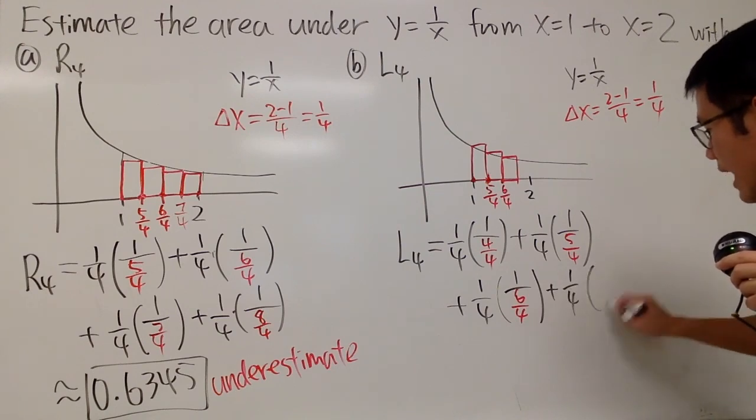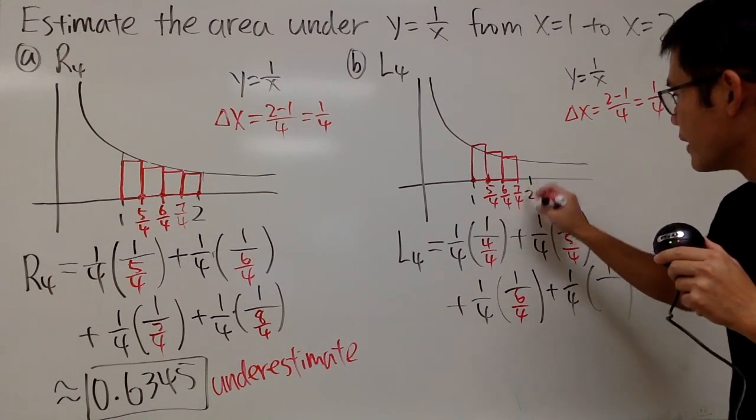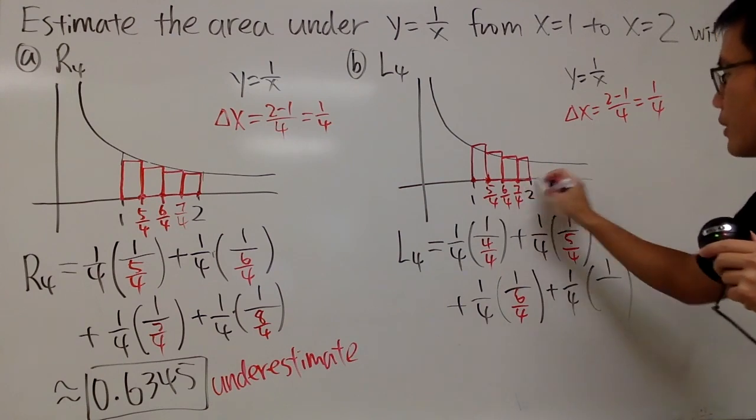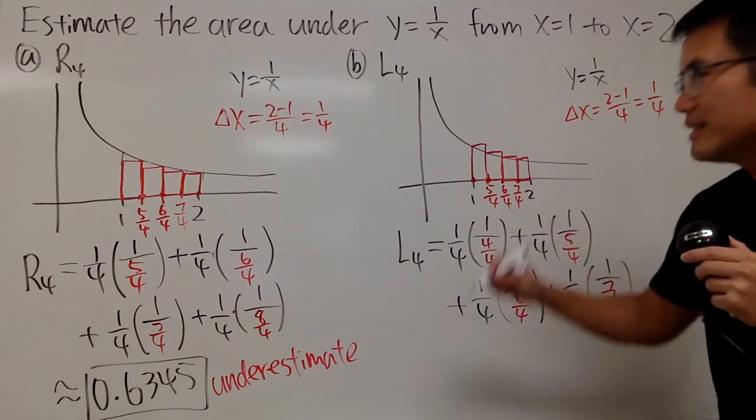1 over 4 times 1 over... We will be using 7 over 4 for the x value. Go up, hit the curve, and then make a rectangle like that. So we actually have 7 over 4 like this.